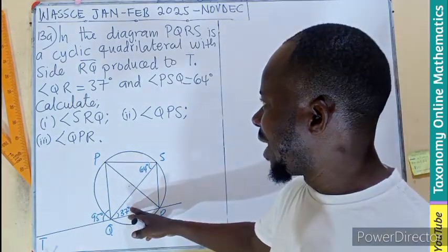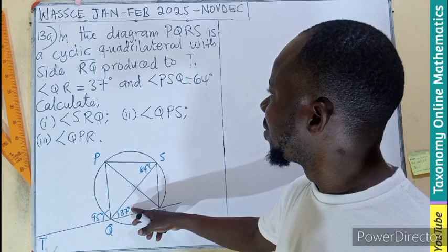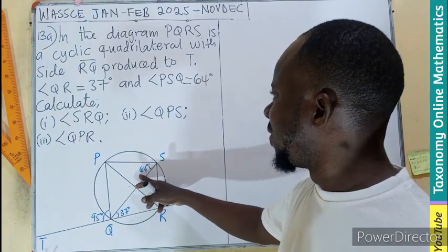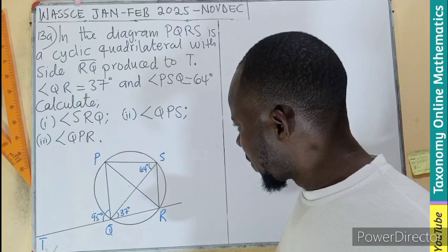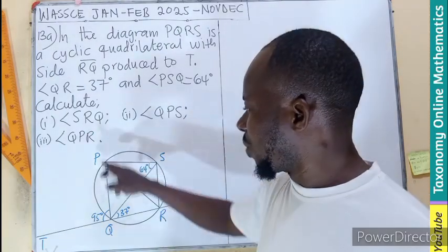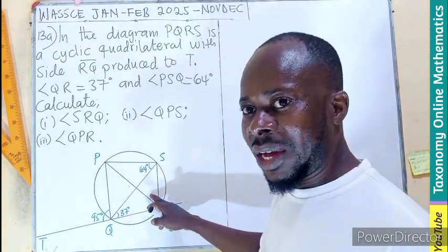The angle is given here as 37°, and this is 64°. We are asked to find angle SRQ. Why are we looking for this angle?